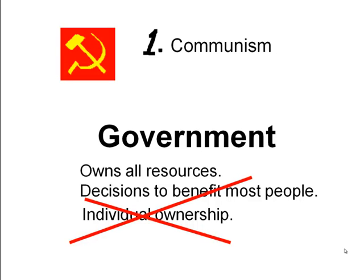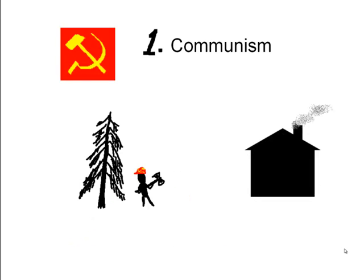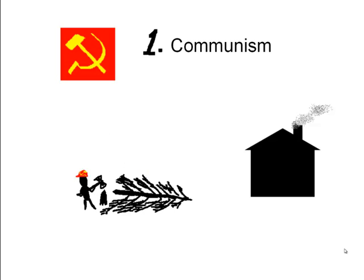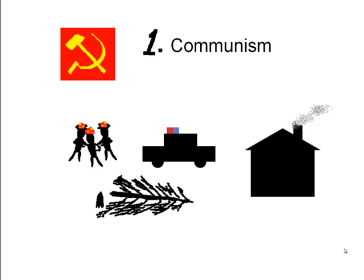Government under communism owns all the resources and makes decisions that hopefully are going to benefit the most people within society. There is no individual ownership — it's about what's good for all of society, not necessarily what's good for the individual. For example, suppose it's the middle of winter and you have a tree in your backyard and you need firewood. Under communism, that would be considered illegal — it's not your tree to chop down. It's the tree of the people.